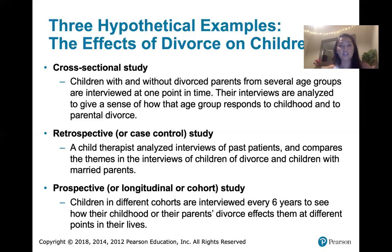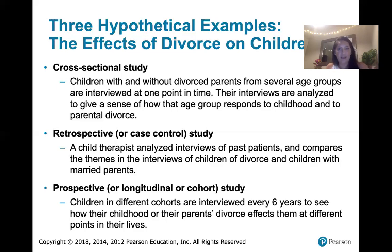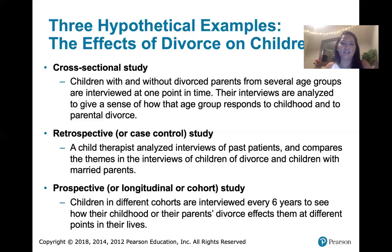To summarize: cross-sectional studies deal with data collected at one point in time. Retrospective studies deal with data from the past, usually from old records of some kind. Prospective studies look at data going forward — looking at a cohort of children every six years now, then six years from now, and six more years later, for however long, 30 years, 50 years.